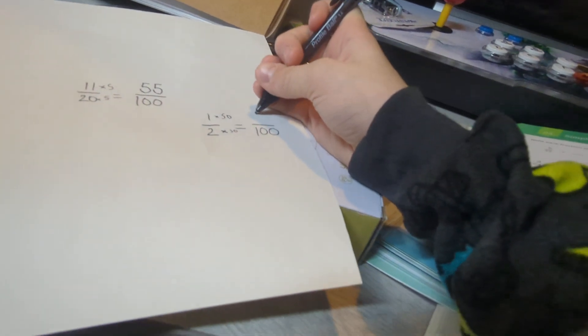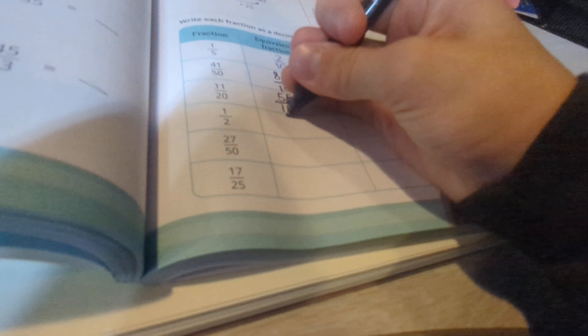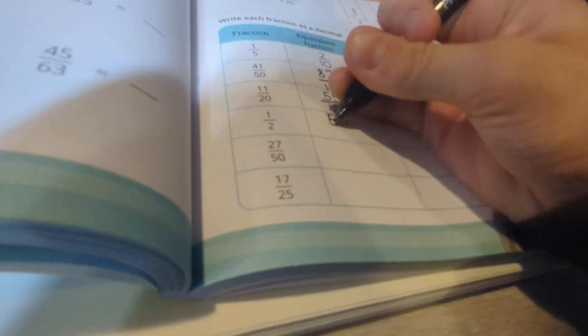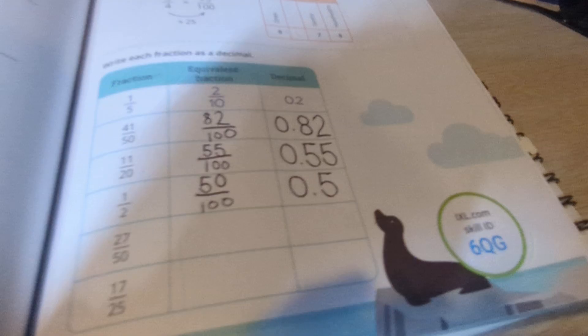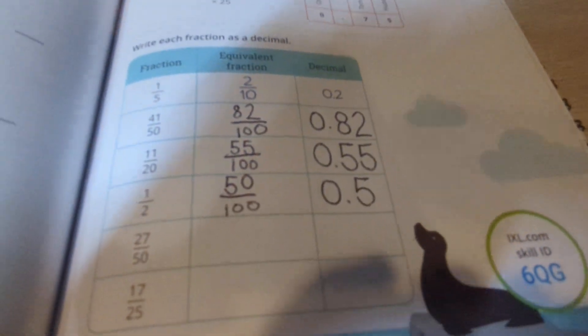1 times 50 is 50. So you got 50 hundredths for this one. And you can write the decimal as 0.5 or 0.50, whichever way you like it.